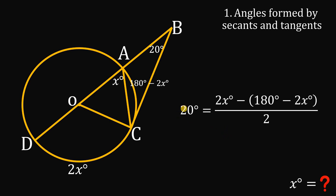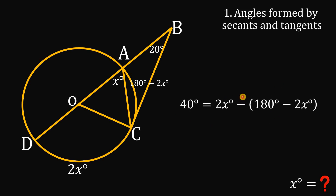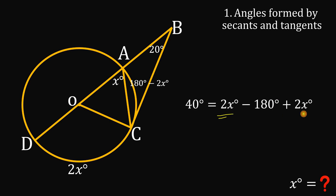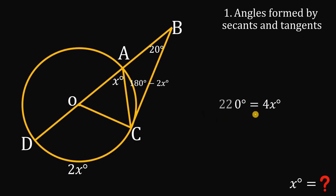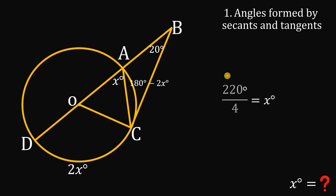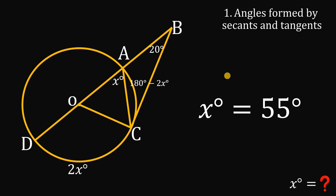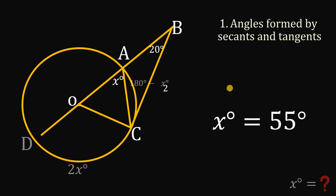Multiplying both sides by 2, then distributing the negative sign to get 2X minus 180 plus 2X, and combining like terms: 2X plus 2X gives 4X degrees. Adding 180 to both sides: 40 plus 180 gives 220 degrees. Dividing both sides by 4: 220 divided by 4 gives 55 degrees. So X equals 55 degrees using method one.